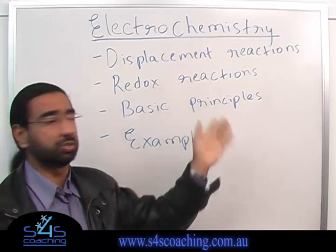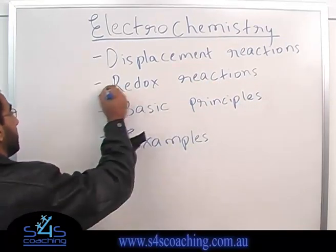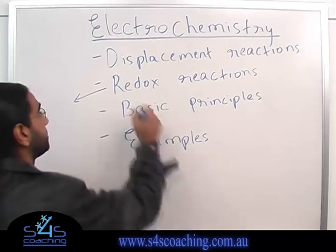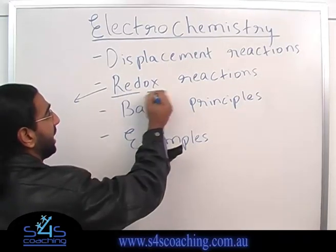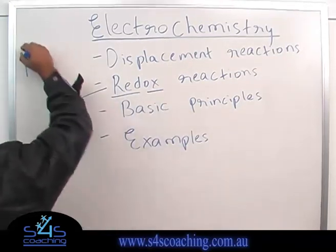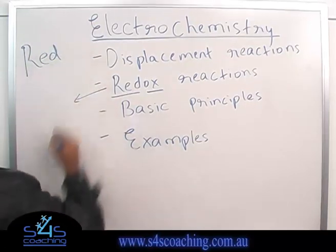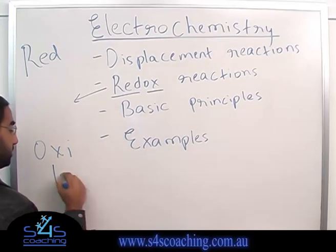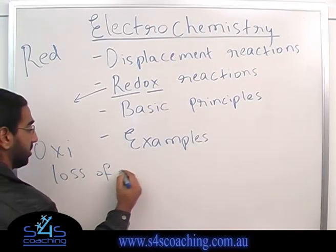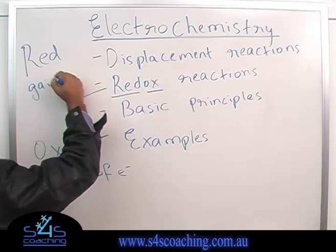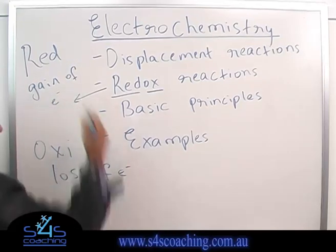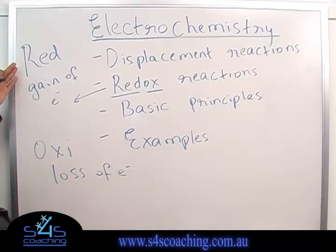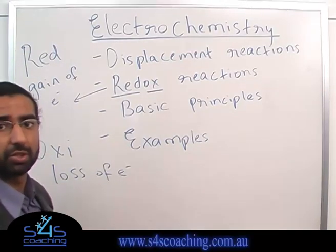We're looking at redox. So let's have a look at redox reactions over here. Redox reactions are basically made up of two parts: reduction and oxidation. So we have reduction and we have oxidation. Oxidation is the loss of electrons and reduction is the gain of electrons. By definition, reduction is the gain of electrons and oxidation is the loss of electrons.